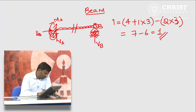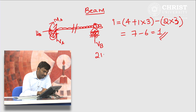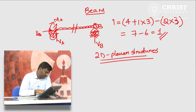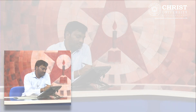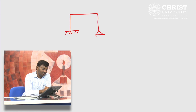This is how you find out the degree of static indeterminacy of different kinds of structures. Remember, whatever we have done here is for 2D planar structures. We will usually deal only with planar structures in our analysis. Now let us see how to reduce the degree of static indeterminacy of any beam or frame. I am going to consider a frame that is fixed at one end and supported on a roller at the other end.